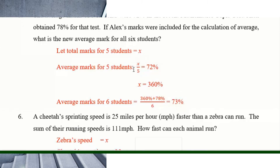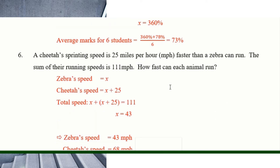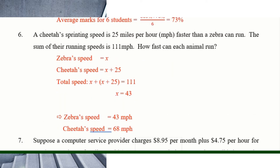The average is x divided by 5 equals 72, so the total marks of the five students was 360. Add Lx's 78 to get 438, then divide by 6 — now six students — and the new average is 73 percent.